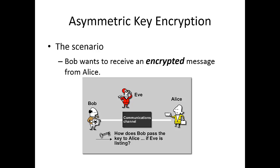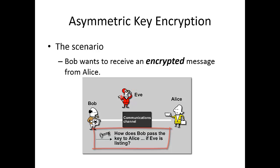Bob in this picture wants to receive an encrypted message from Alice. The biggest challenge here is if you use symmetric key encryption, Bob needs to send his symmetric encryption key to Alice. As you can see in this picture, Eve is waiting for an opportunity to intercept that secret symmetric key. So if a symmetric key is sent, there's a pretty high probability for Eve to intercept it and be able to decrypt all messages sent to Alice.